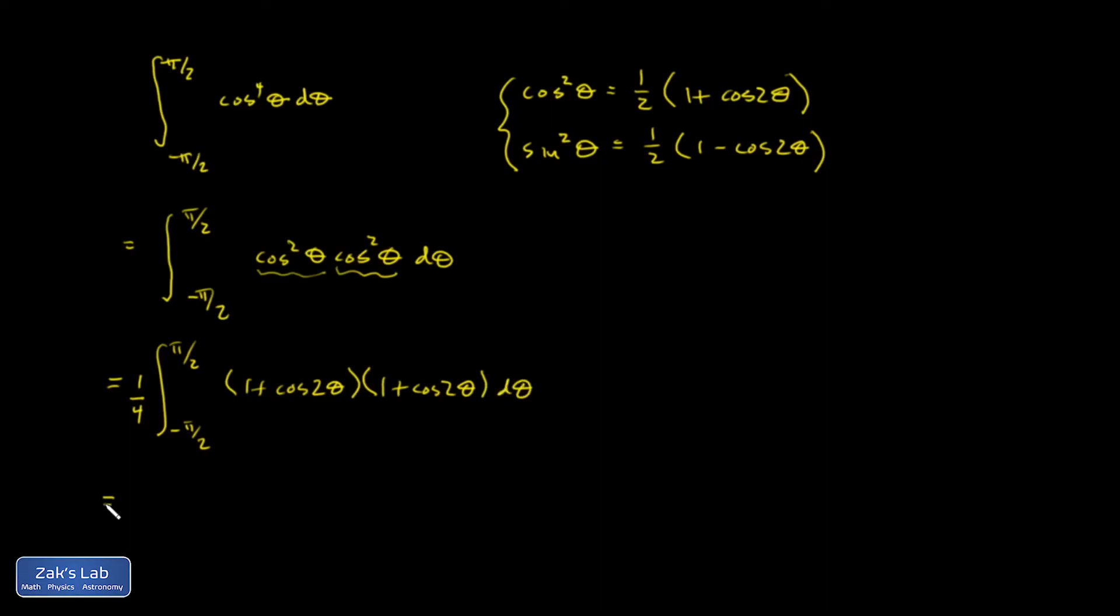And then I'm going to expand that. I get 1 plus 2 cosine 2 theta, that's the cross terms, and then cosine squared 2 theta d theta.